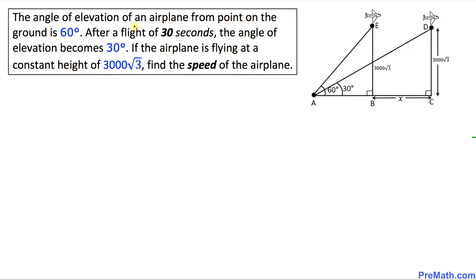The angle of elevation of an airplane from point on the ground is 60 degrees. After a flight of 30 seconds, the angle of elevation becomes 30 degrees. If the airplane is flying at a constant height of 3000√3, find the speed of this airplane.